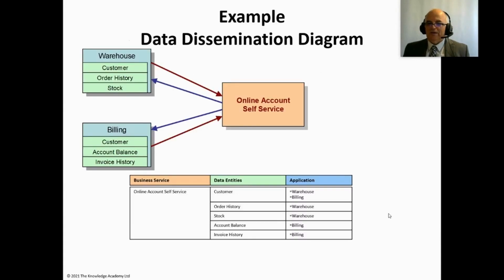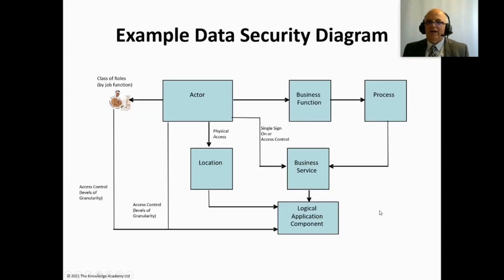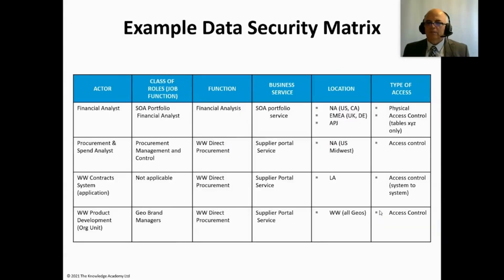And it could look a bit like that. The data security diagram depicts which actors — persons or organizational units — can access which enterprise data. This relationship can also be shown in a matrix form between two objects or shown as a mapping. That's an example data security diagram shown as a matrix.